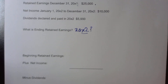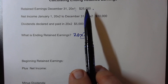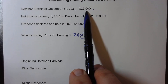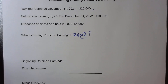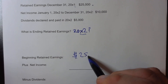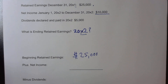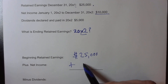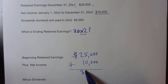Our beginning retained earnings is the ending retained earnings from last year. So January 1st of the year ending in two, the retained earnings are the same as December 31st of the year ending in one — I'm going to write $25,000 here. We add our net income of $10,000, giving us $35,000.